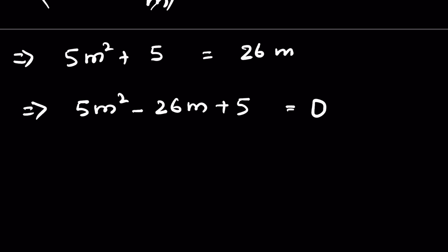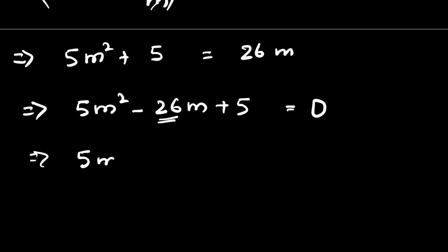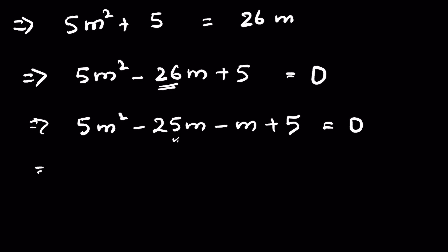This is a quadratic equation. To factorize it, we need two numbers whose product is 5 times 5, which is 25, and whose sum or difference equals 26. So we split the middle term as minus 25m minus m, giving 5m squared minus 25m minus m plus 5 equals 0.